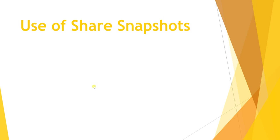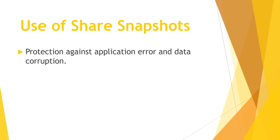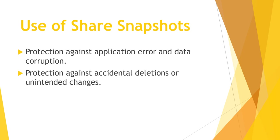What are the uses of share snapshots? First, it acts as protection against application errors and data corruption. Second, protection against accidental deletions or unintended changes — if data has been deleted from the user end because of a mistake or application error, we can restore the previous version. Third, general backup purposes. Remember in part 3 I mentioned that soft delete is at file share level, not at individual file level — but using share snapshots you can take backup at file level also, even if you have not enabled soft delete. I hope you understood share snapshots — in case of any issues or doubts please comment below.